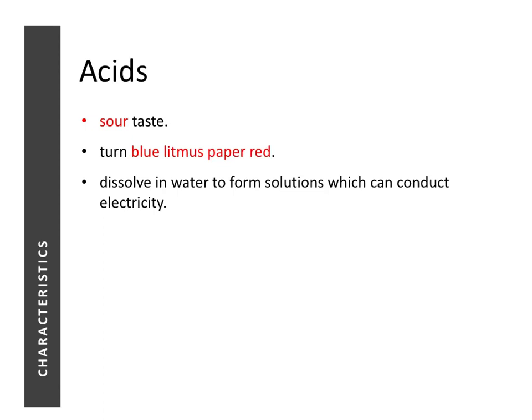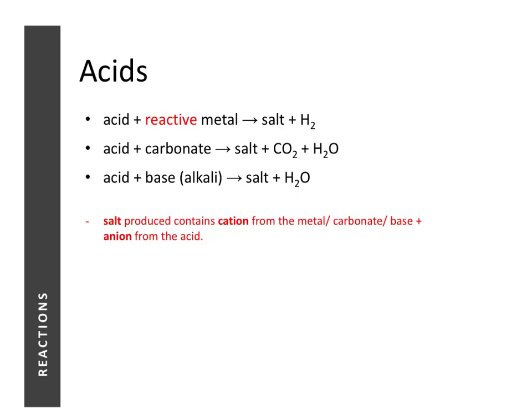Lastly, acids can dissolve in water to form solutions which can conduct electricity. Recall from the topic of chemical bonding — in order for a substance to conduct electricity, it must contain something that is charged, and that charged thing must be able to move freely. Using the example of hydrochloric acid, when it dissolves in water it contains hydrogen ions and chloride ions, and in solution form these ions are free to move. That's why acids form solutions that can conduct electricity.